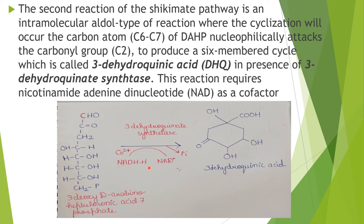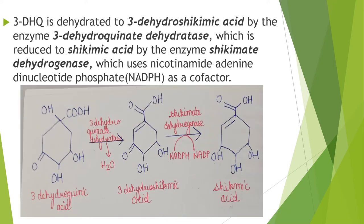This reaction requires nicotinamide adenine dinucleotide (NAD) as a cofactor. 3-Dehydroquinic acid is dehydrated to 3-dehydroshikimic acid by the enzyme 3-dehydroquinate dehydratase, which is then reduced to shikimic acid by the enzyme shikimate dehydrogenase, which uses nicotinamide adenine dinucleotide phosphate (NADP) as a cofactor.